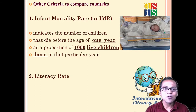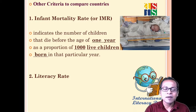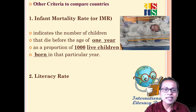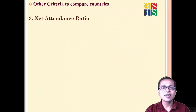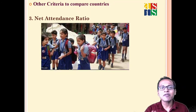Another important criterion to compare development is education. Through education, a person can earn efficiently, earn more, live better, and manage themselves better. Hence literacy rate is one such criterion. Those who are aged seven and above and are able to read and write are counted as literate persons.